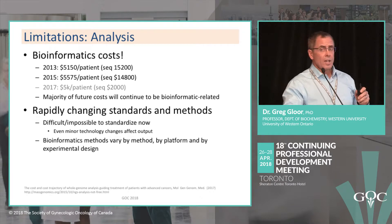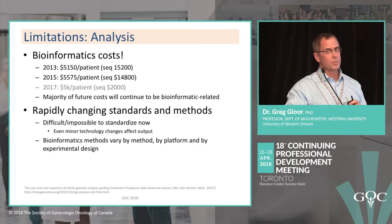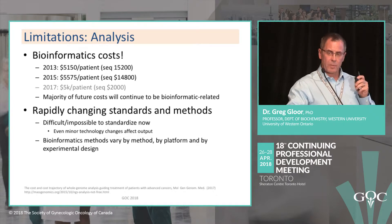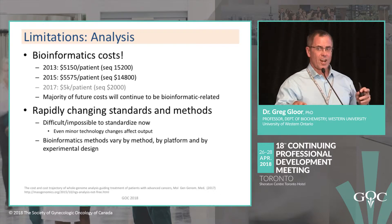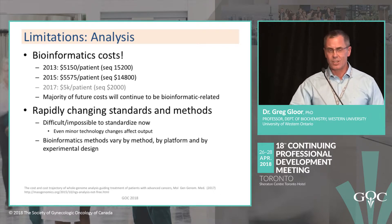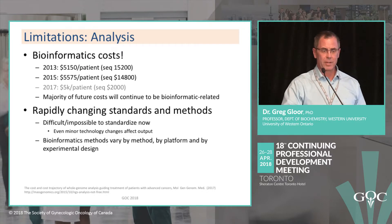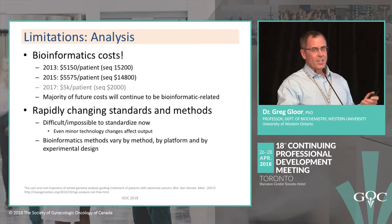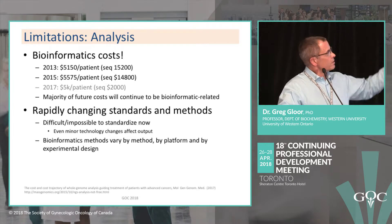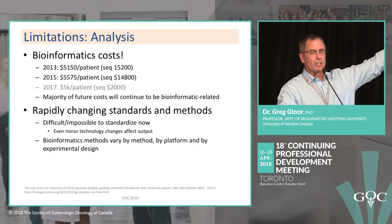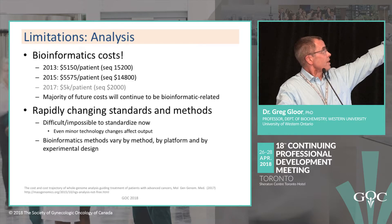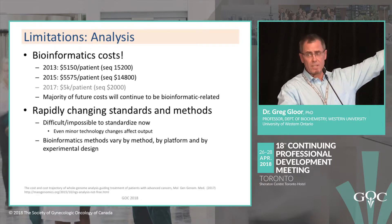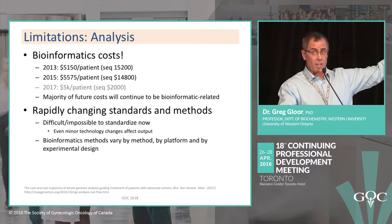Bioinformatics costs are one of my personal bugaboos. Typically someone will collect a big dataset over months. But here's data from the UBC Genome Centre: in 2013, it cost fifteen thousand dollars to collect the data and fifty-five thousand dollars to analyze it per patient. In 2015: fourteen thousand to collect, five thousand to analyze. In 2017: two thousand to collect, still five thousand to analyze. The bioinformatics is a fixed cost.